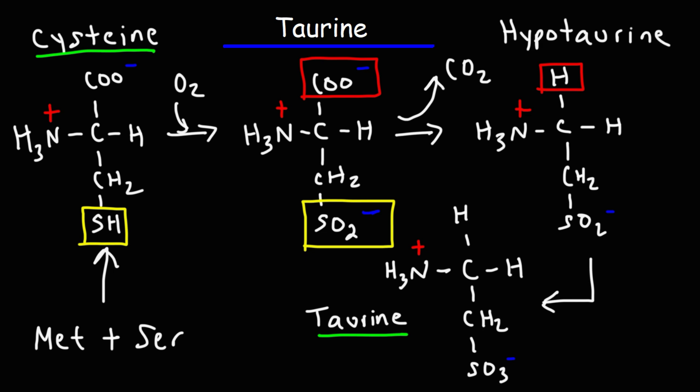When you hear the word hypo, hypo means below, because if you were to compare hypotaurine and taurine, hypotaurine has one less oxygen than taurine. So the last step is oxygenation - the SO2 group is oxidized to SO3. And so the production of taurine from cysteine involves three steps: oxidation, decarboxylation, and oxidation again.